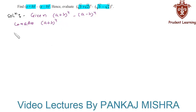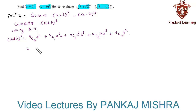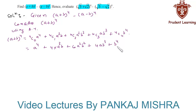Using the binomial theorem, we can say that (a + b) whole raised to 4 is equal to 4C0·a⁴ + 4C1·a³b + 4C2·a²b² + 4C3·ab³ + 4C4·b⁴. This equals a⁴ + 4a³b + 6a²b² + 4ab³ + b⁴. Let us call this equation 1.